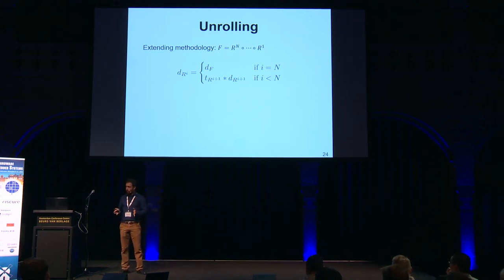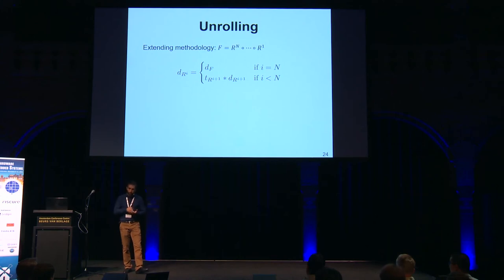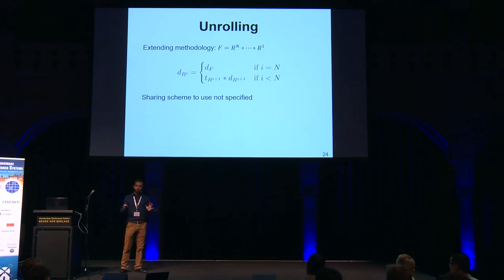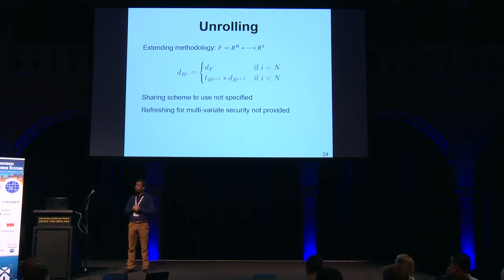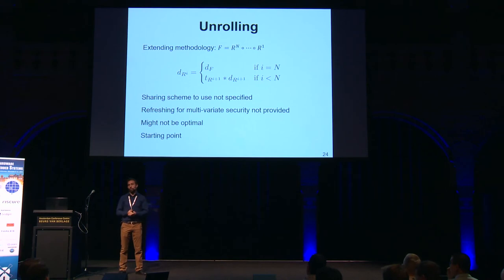We start from the targeted degree of security of the last layer and crawl back to subsequent previous layers. The current layer's required security depends on the algebraic degree and the degree of security of the next layer. This methodology does not specify which sharing scheme to use — only the required degree of security for each layer. It does not automatically provide the randomness needed for multivariate security and may not be the most optimal design, but it serves as a starting point toward reduced-latency secure implementations.